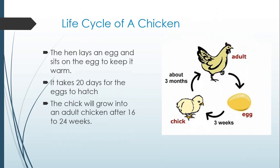Now we're going to quickly look at the life cycle of a chicken — this is your typical life cycle of a bird. The hen lays an egg and sits on it to keep it warm. It takes 20 days for the egg to hatch. Then the chick will grow into an adult chicken after about 16 to 24 weeks. And then they can lay their own eggs. This happens really quickly and is a good example of what a typical bird life cycle looks like.